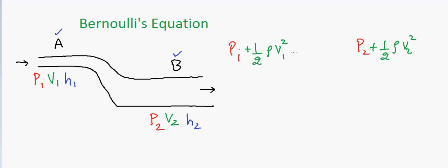And the last thing is the potential energy, and that will be given by rho G H1, so that should be equal to rho G H2. And that's all, that's our Bernoulli's equation.